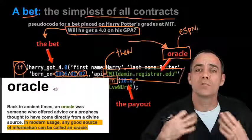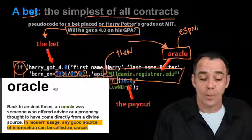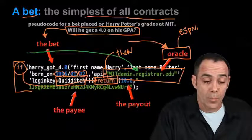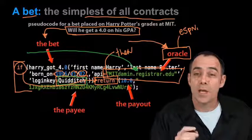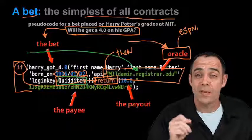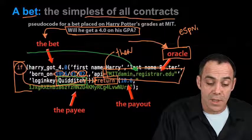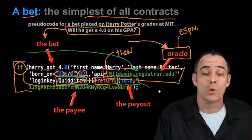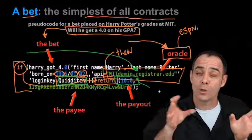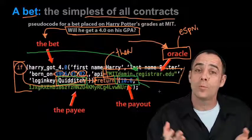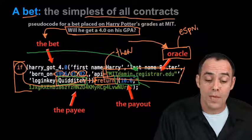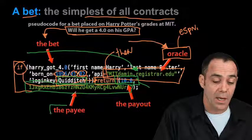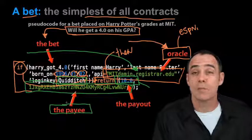Upon Harry Potter's graduation, this code will dig into this site, putting in the login code to check Harry Potter's grades. If he has a 4.0, then we will send 10 units — the payout. It could be dollars, Bitcoins, Dogecoins, Euros — whatever we agree on. As long as we agree beforehand on the bet, we have a nice little contract. Then we will send 10 Bitcoins, for example, to the Bitcoin address, which is the payee.